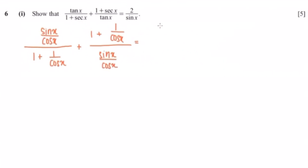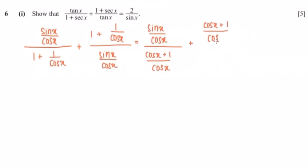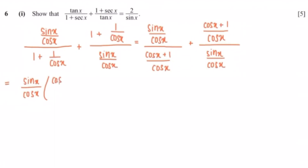Now I'm going to make the denominator the same. So that's sine x over cosine x plus 1 over cosine x. Same with the other one — cosine x plus 1 over cosine x — divided by sine x over cosine x. What I can do now is flip the fraction to turn it into multiplication. So that would be sine x over cosine x multiplied by cosine x over cosine x plus 1.